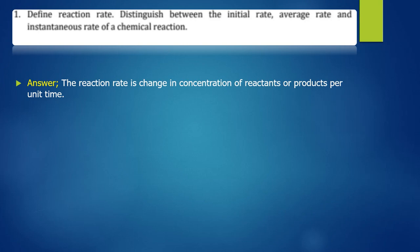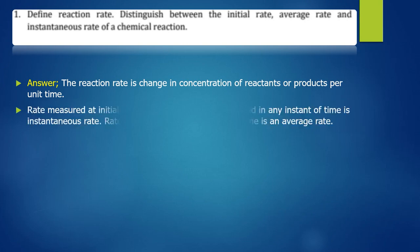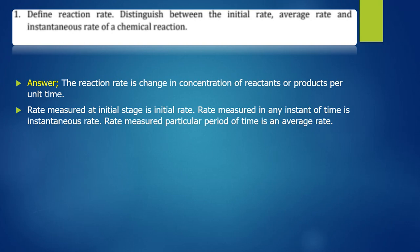Now, distinguishing between the three rates: the initial rate is measured at the initial stage — at the beginning of the reaction. The instantaneous rate is measured at any instant in time. The average rate is measured over a particular period of time. With that, you are done for question one.